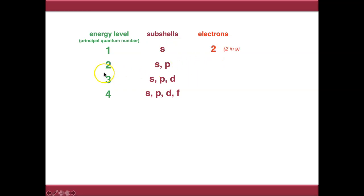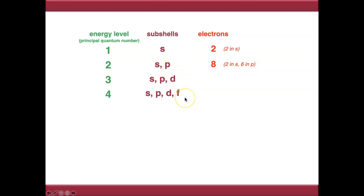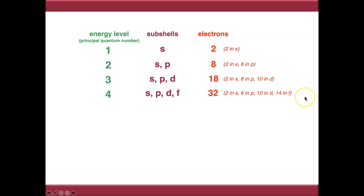In energy level 2 we've now got eight electrons — two in the S orbital and six in the P orbitals. Remember there are three P orbitals: Px, Py and Pz. Going on through energy levels 3 and 4, we go up to 18 and 32 electrons, because we've got increasing numbers of orbitals.